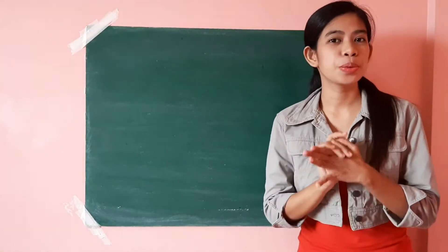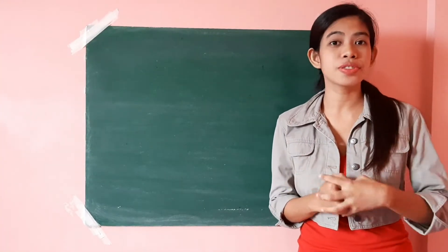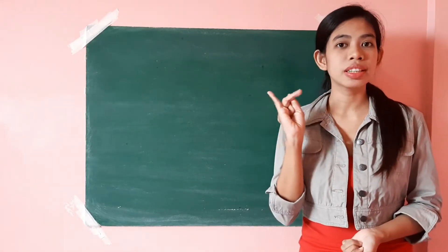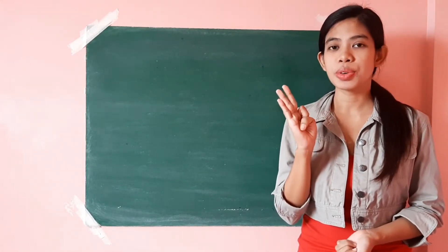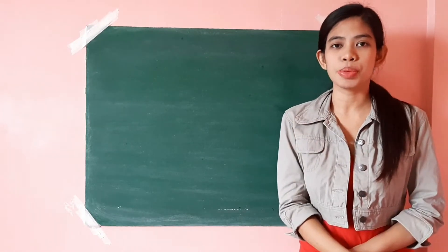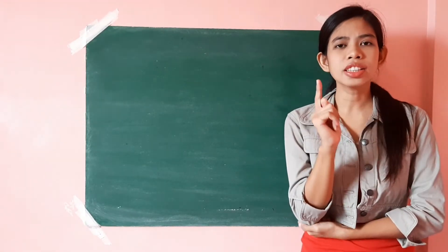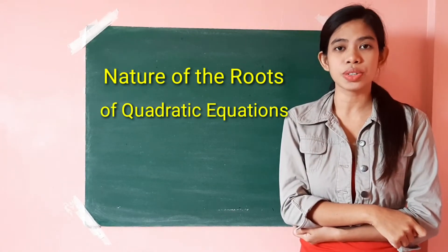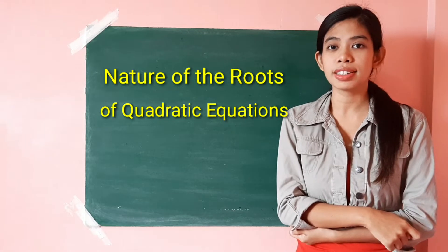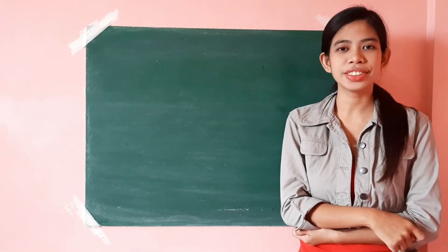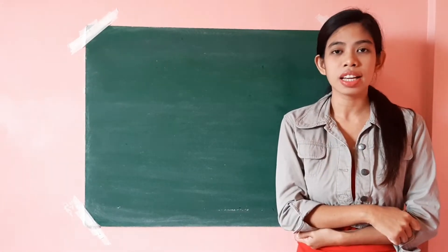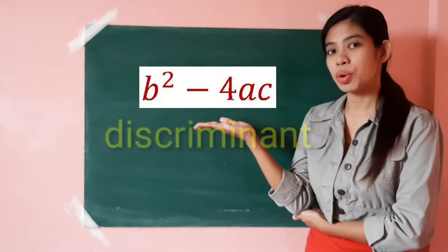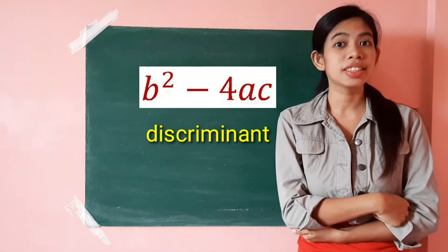Good day learners. We are done with the four methods of solving quadratic equations, which are by extracting the square roots, factoring, completing the square, and by using the quadratic formula. But did you know that you can still determine the nature of the roots of these quadratic equations even before solving it? All you need to do is to find out the value of the expression b squared minus 4ac, or what we call the discriminant.